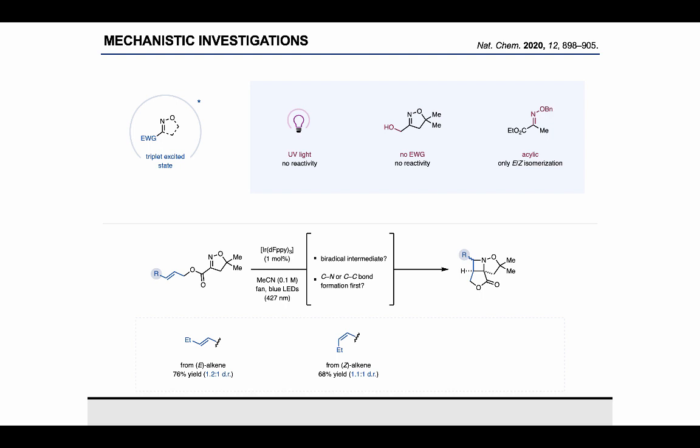While these disubstituted alkenes easily underwent the intermolecular cycloaddition reaction, the corresponding terminal alkenes shown here seem substantially less reactive and gave a rather complex mixture of both intra- and intermolecular cycloadducts, which suggested to us that the first step of the cycloaddition reaction is most likely in fact the C-C bond formation. In this case, the resulting C-centered radical is stabilized by the adjacent alkene substituent, which explains the drastic difference in the reactivity between the substituted and unsubstituted alkene in these reactions.